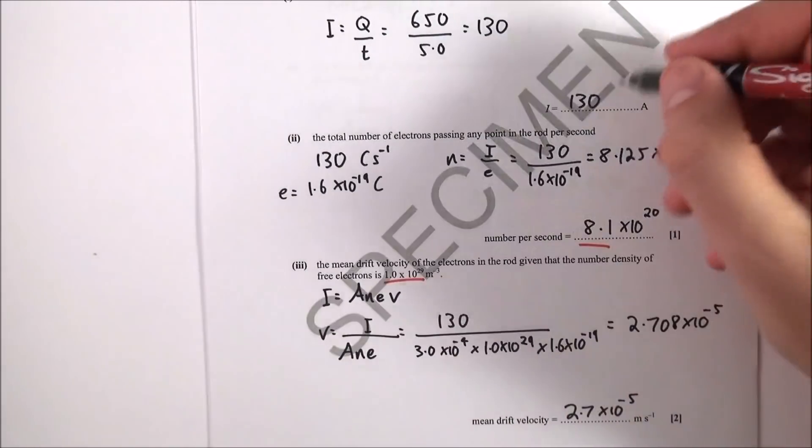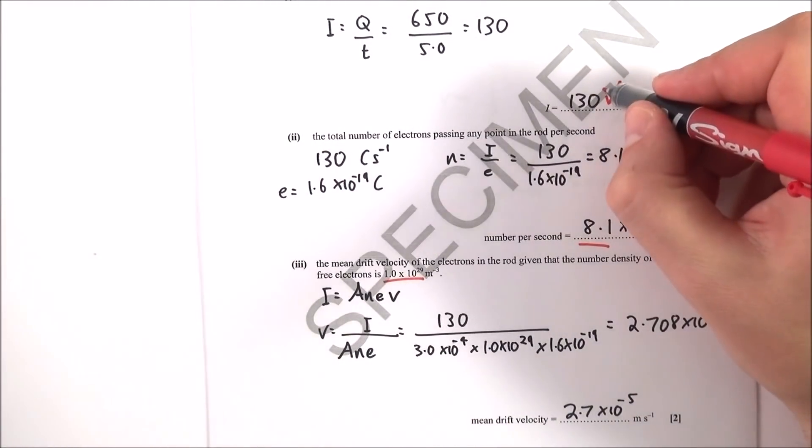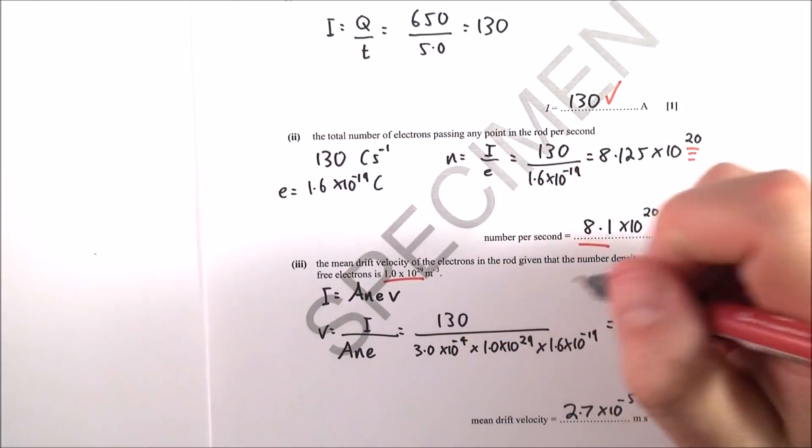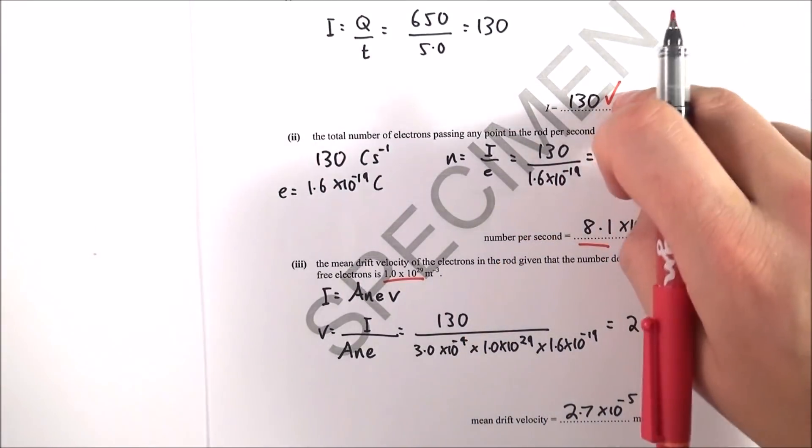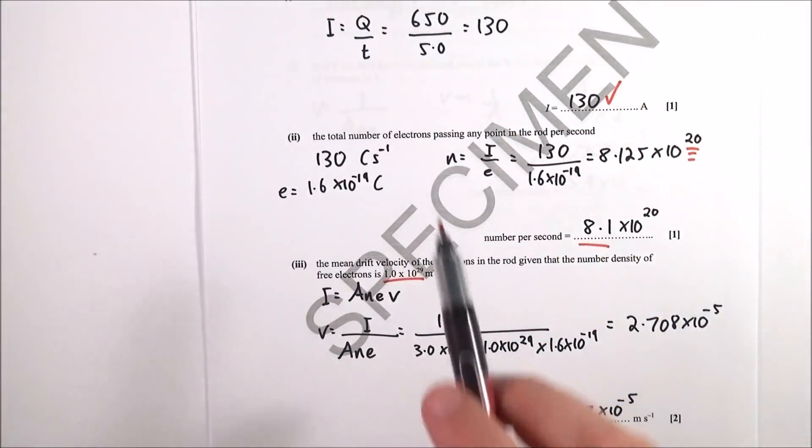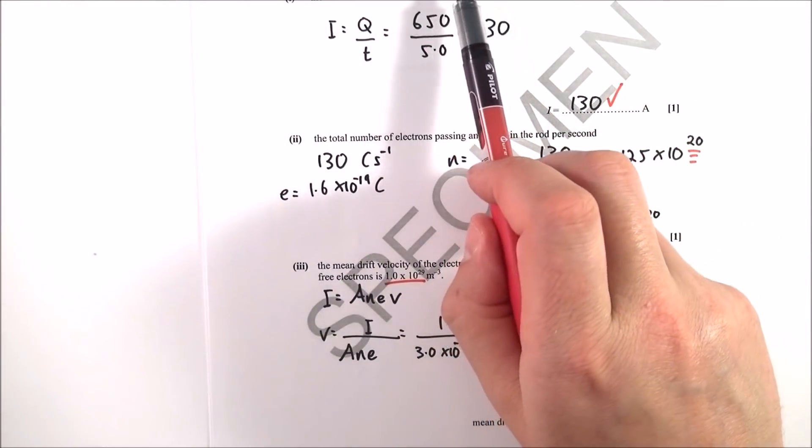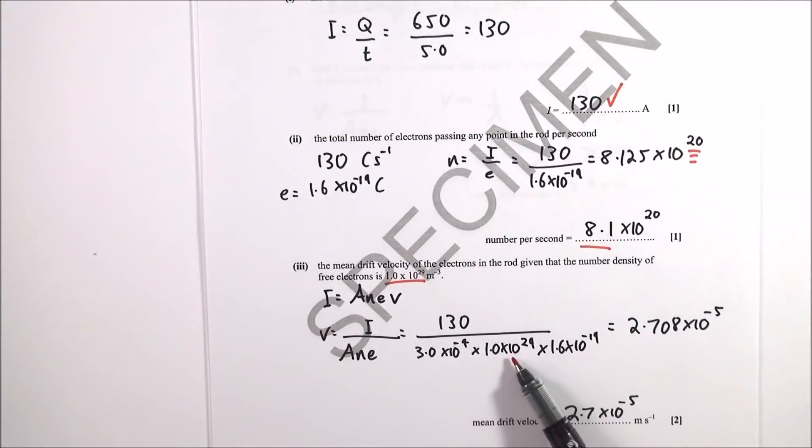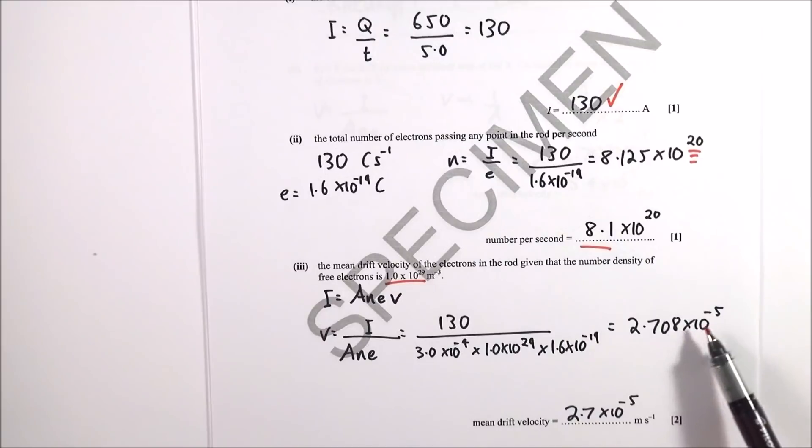We've got the number for the current that you've worked out up here, and again, if you get that wrong, it's error carried forward, so that's always good for you. So if you're going to get one thing wrong, it doesn't matter, it'll only lose you one mark. I've got the area they've given to me directly up here in the other part of the question. I've got the number density, and I've got the charge, the elementary charge, and that gives 2.708 times 10 to the minus 5.